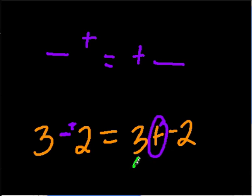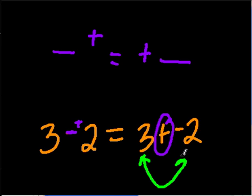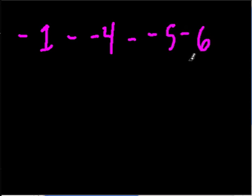I could switch this order around and get the same answer. I can't really do the same thing with subtraction. So what my suggestion is to you is if you get a problem that looks difficult with subtraction, and that's different for everybody, right? But here, let's say it's negative one minus negative four minus negative five minus six.